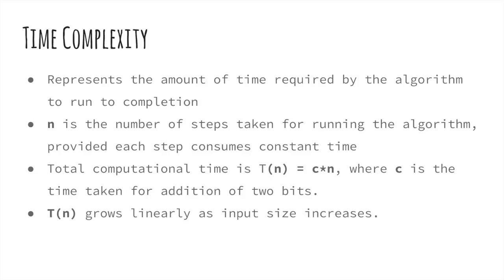The time complexity of an algorithm represents the amount of time required by the algorithm to run to completion. Time requirements can be defined as a numerical function T(n), where n can be measured as the number of steps, provided each step consumes constant time. For example, addition of two n-bit integers takes n steps. Consequently, the total computational time is T(n) = c×n, where c is the time taken for the addition of two bits. Here, we observe that T(n) grows linearly as the input size increases.